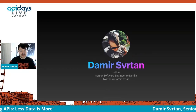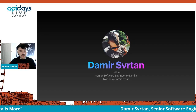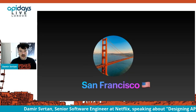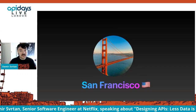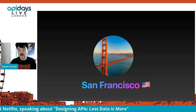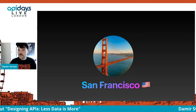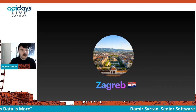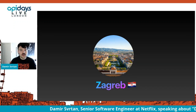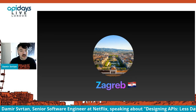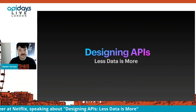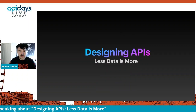Let me introduce myself. My name is Damir Svartan, my pronouns are he/him, and I work as a senior software engineer at Netflix. I'm based in San Francisco, where I moved about three years ago and where I'm presenting from now — I woke up about an hour ago. Prior to moving to San Francisco, I used to live in Zagreb, the capital city of Croatia, a small country in Southeastern Europe, where I grew up and spent the first 28 years of my life. Designing APIs: less data is more.